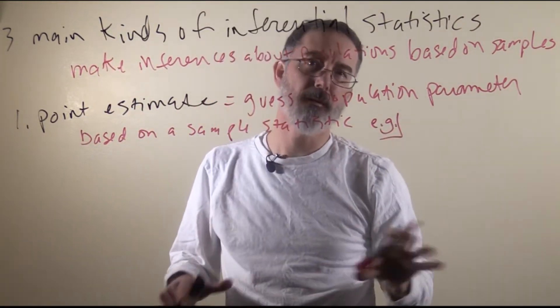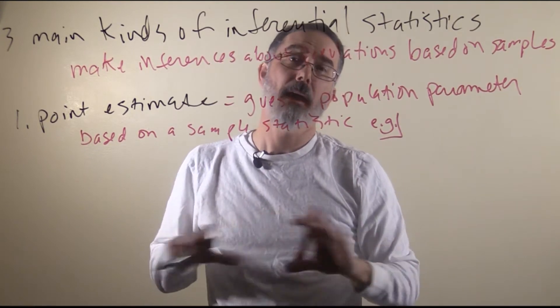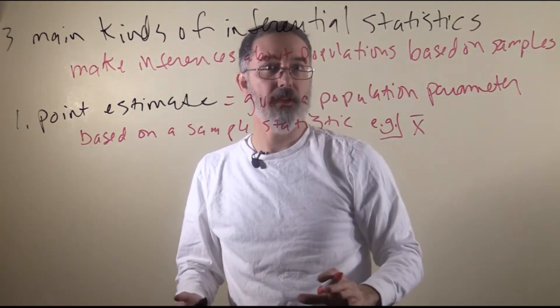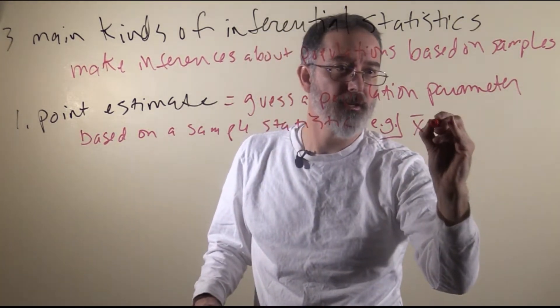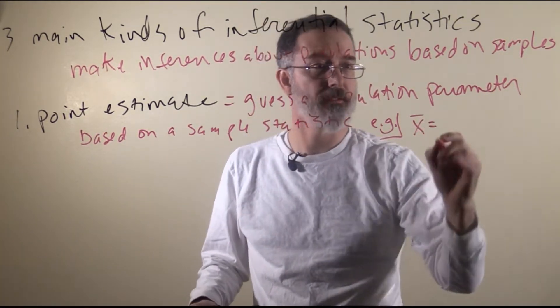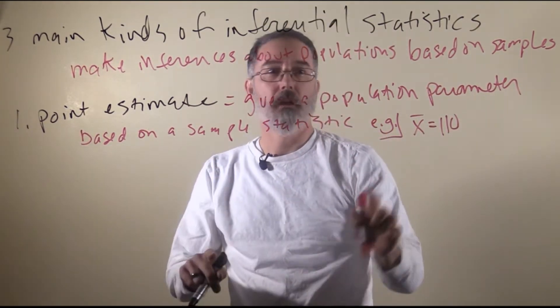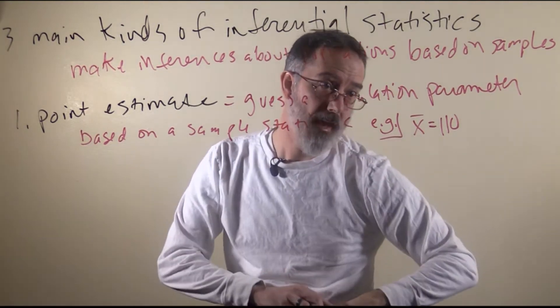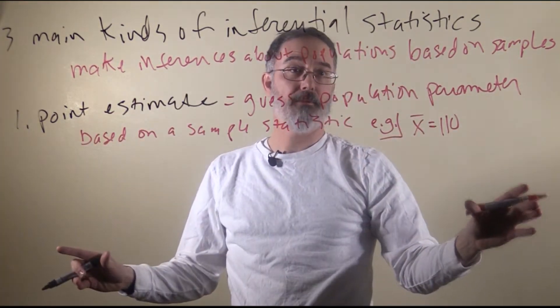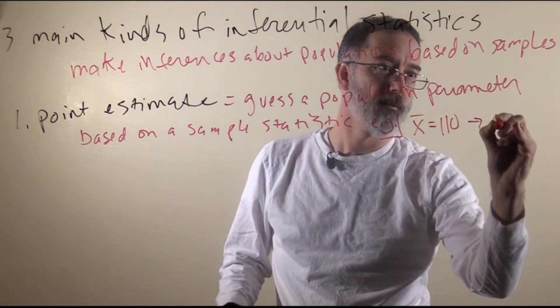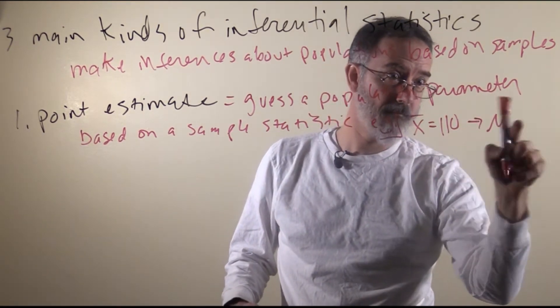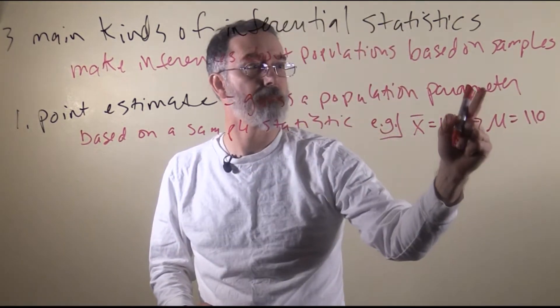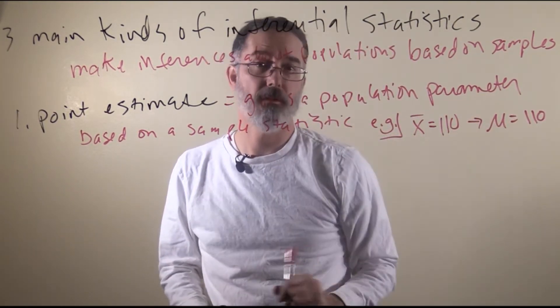For example, if we are trying to figure out the average intelligence of SUU students, and we have a sample, and we measure their intelligence, and the average of that sample's intelligence is 110, then we can use this as our best guess at the average intelligence of all SUU students, which would be a population parameter. So we would guess that the SUU student's population mean IQ is 110.